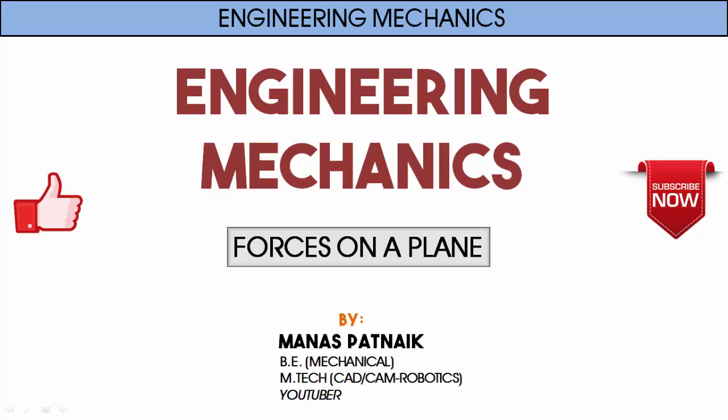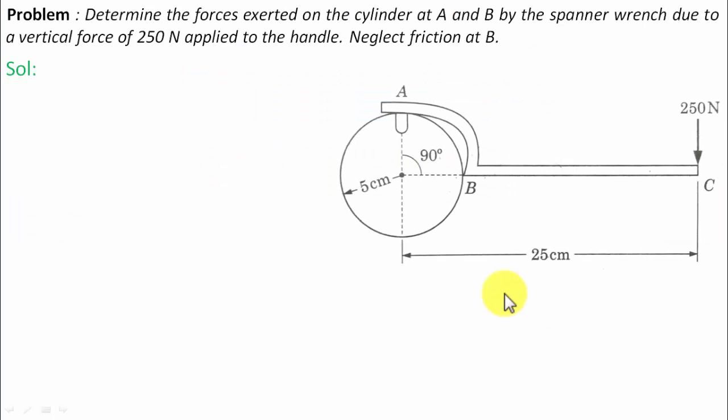Hi there guys, hope you're doing well. This is your friend and tutor Manus. Let's see what this problem has in store. Determine the forces exerted on the cylinder at A and B by the spanner wrench due to a vertical force of 250 Newton applied to the handle. Neglect friction at B.